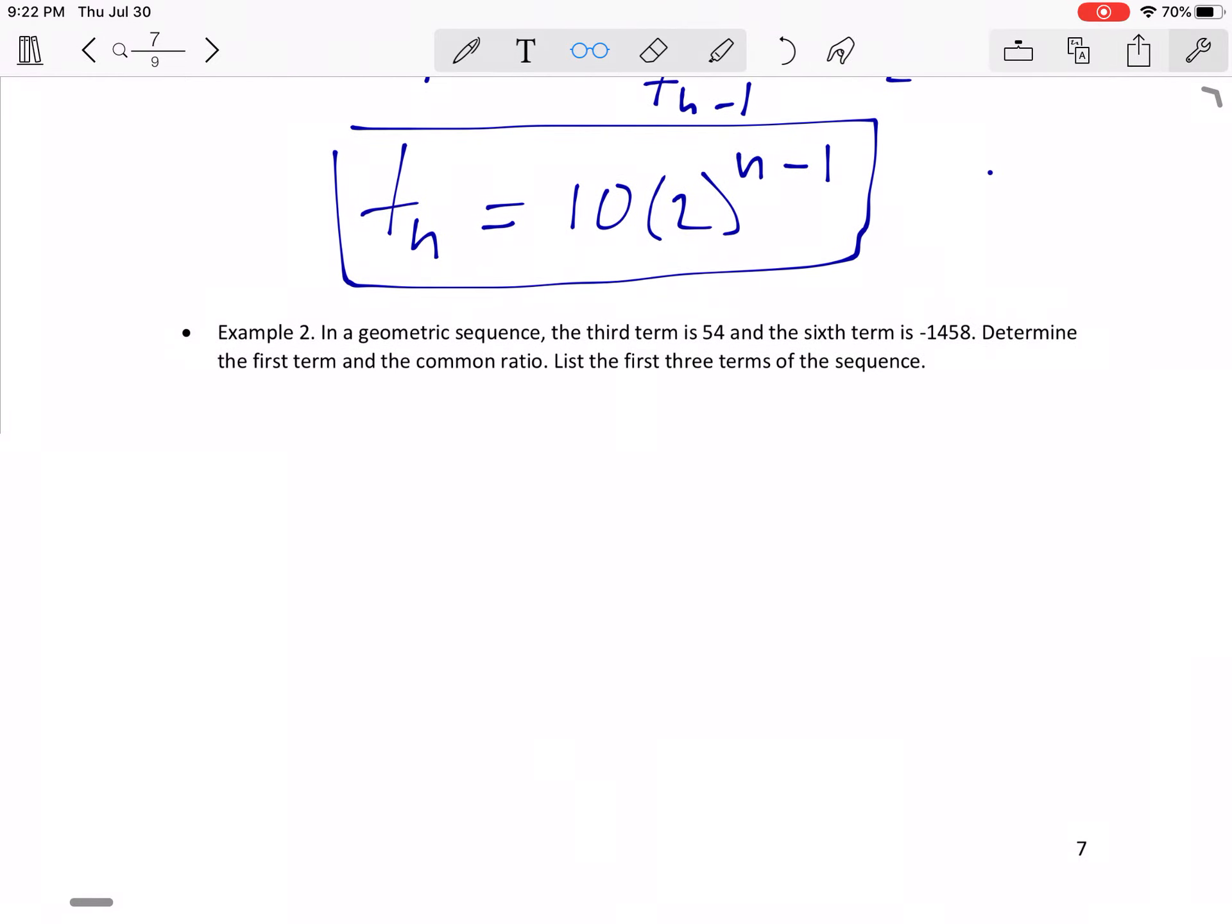Let's look at another one, example two here. So in a geometric sequence, the third term is 54 and the sixth term is negative 1,458. So notice here that our terms can be negative as well. So determine the first term and the common ratio, list the first three terms of the sequence. So what we are given here is we're told what the third term is, so the third term is equal to 54 and we're told the sixth term, so T6 is equal to negative 1,458.